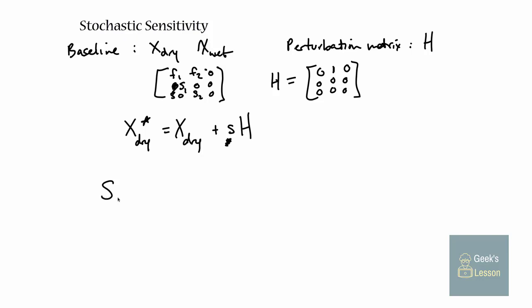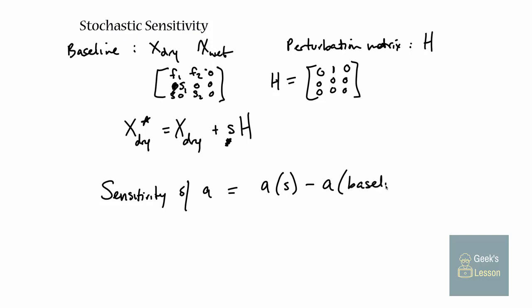The sensitivity of A, my stochastic growth rate, is going to be A using the perturbed system (X_star_dry and X_wet) minus what the stochastic growth rate would have been using the baseline, all divided by s - divided by how big we made the perturbation. You could estimate this by just doing simulations: run simulations to get the stochastic growth rate under the original system, then add some small amount of fertility, redo the simulations, get another estimate of the stochastic growth rate, find the difference, divide by how big the change was, and that gives you an estimate of the sensitivity of A.